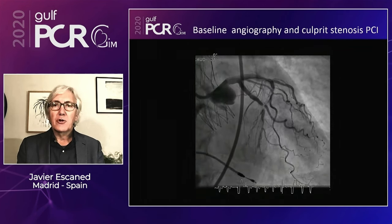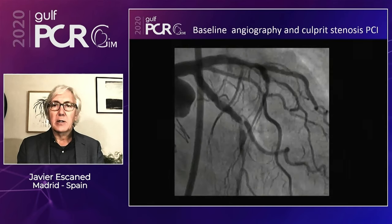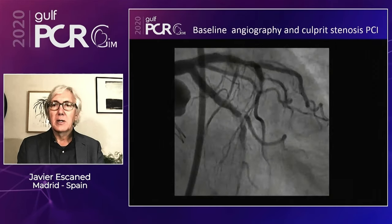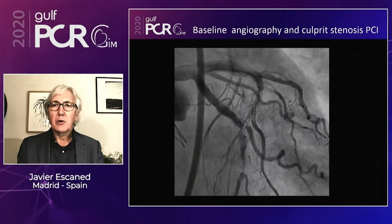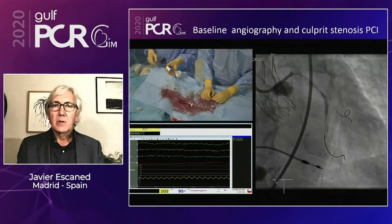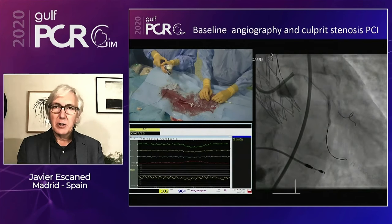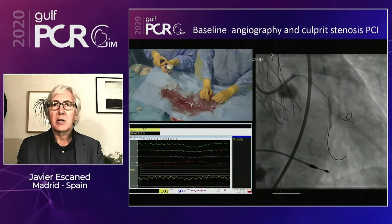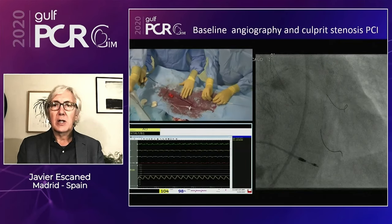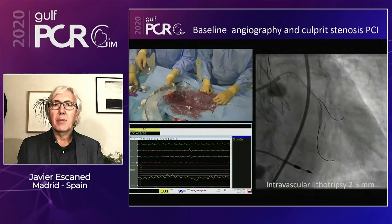The angiogram performed through the Portico valve showed a very tight stenosis in the circumflex — a Medina 111 bifurcation — and also a stenosis in the LAD, identified as the non-culprit lesion. All vessels were heavily calcified. Based on this information, treatment was focused on the culprit lesion: the critical bifurcation in the circumflex and the obtuse marginal. During dilation, it was immediately evident that extensive plaque preparation would be needed.